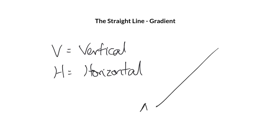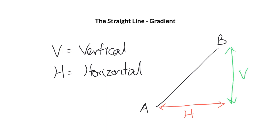So if we're creating a line AB with a positive gradient, because it's moving upwards from left to right, then we have two elements that contribute here. Along the bottom is the H, the horizontal, and up and down is the vertical distance. It's the change in those elements — the change in the horizontal distance and the vertical distance moving from A to B — that will in fact calculate the gradient.